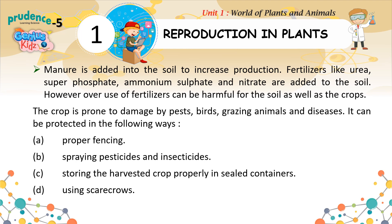The crop is prone to damage by pests, birds, grazing animals, and diseases. It can be protected in the following ways: proper fencing, spraying pesticides and insecticides, storing the harvested crop properly in sealed containers, and using scarecrows.